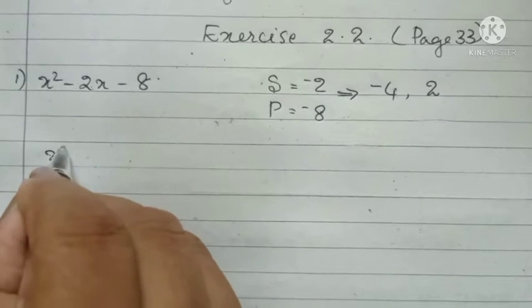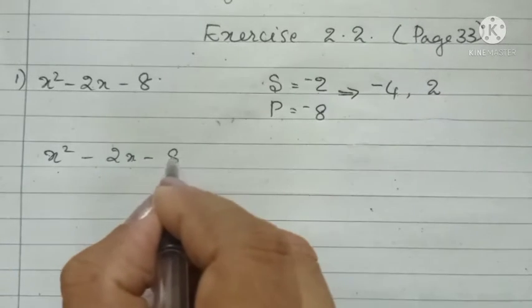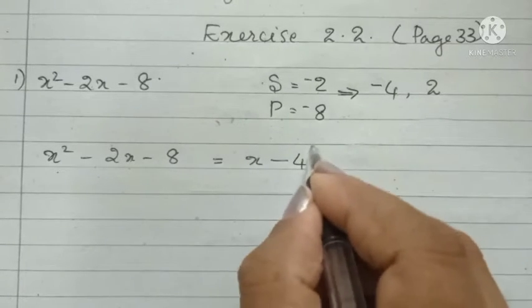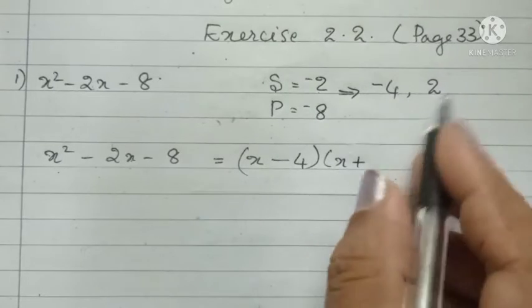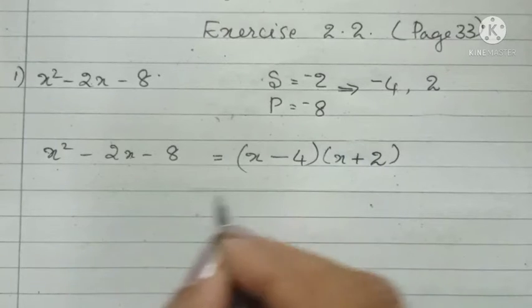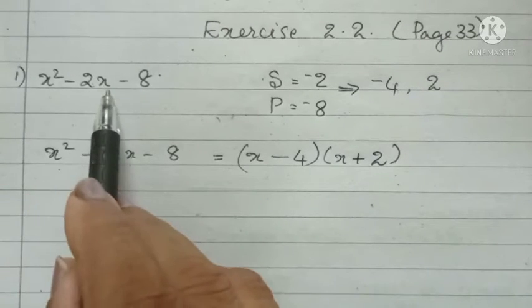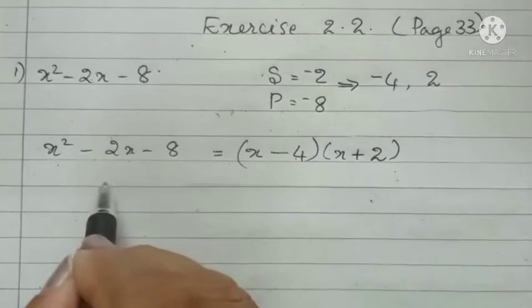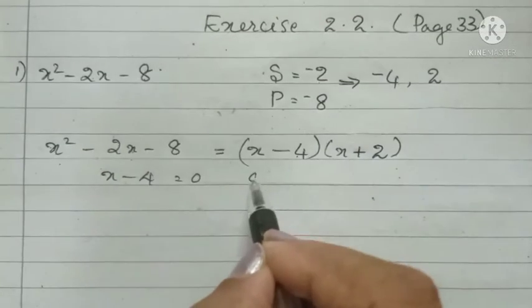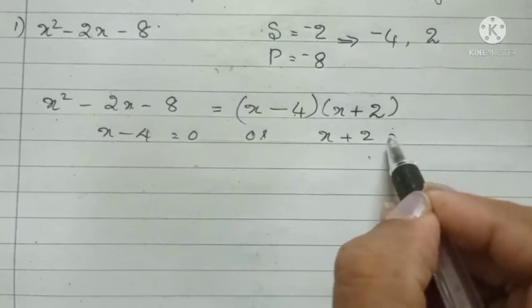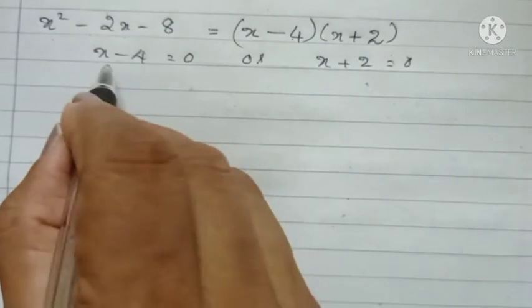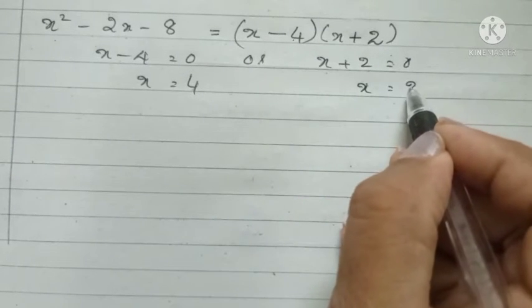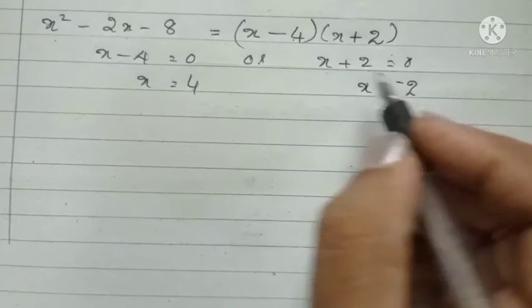The two numbers are minus 4 and 2. Minus 4 plus 2 equals minus 2, and minus 4 into 2 equals minus 8. So we split x² - 2x - 8 as (x - 4)(x + 2). The value of x² - 2x - 8 is 0 when x minus 4 equals 0, giving x = 4, or when x plus 2 equals 0, giving x = minus 2. These are the two zeros.